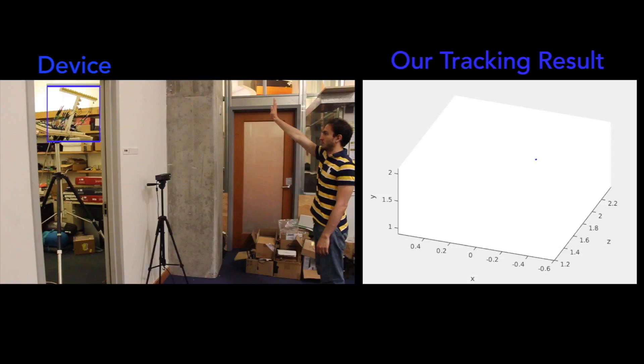The device can also track human limbs from behind the wall. Here, we show a scenario where a person draws a shape in the air, and we show the output of our device to the right. The device can trace the person's hand with high accuracy.